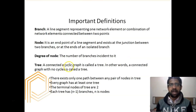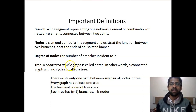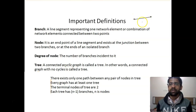The first definition is branch. A branch is a line segment representing one or more network elements, or a combination of network elements, connected between two points. Basically, any line segment connecting two nodes is called a branch.